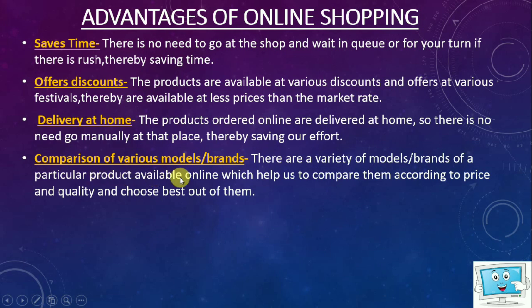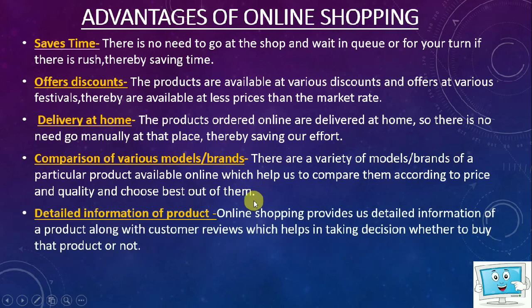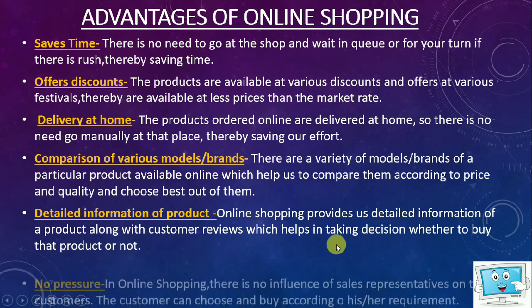The fourth point is comparison of various models and brands. When shopping online, there are many models, products and brands — for example mobile products — and you can compare them to find which is best according to quality and price. The fifth point is detailed information of the product: when you purchase any product online, you can check the customer reviews below the product to see whether that product is worth buying, as it gives you an idea of that particular product.